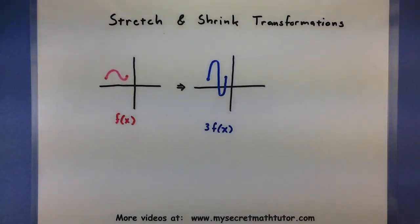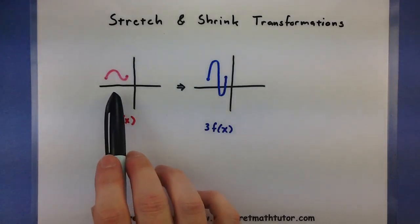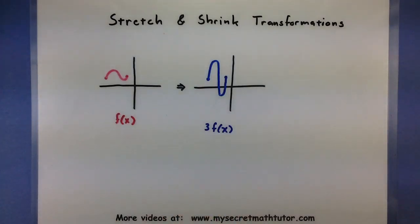Stretching and shrinking transformations are another couple of types which we'll explore more in depth in this video. In a nutshell, you can think of maybe starting with some sort of parent function and then either stretching it vertically, horizontally, or possibly shrinking it in one of those two directions as well.